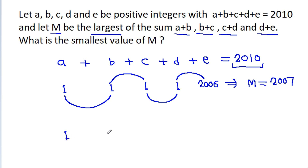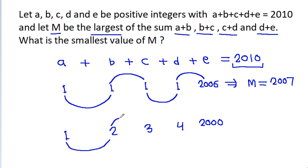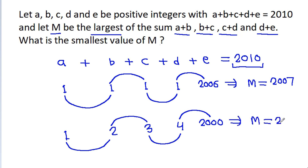Suppose a is 1, b is 2, c is 3, d is 4; then 4 plus 3 is 7, plus 2 is 9, plus 1 is 10, so e will be 2000. In this case, a plus b is 3, b plus c is 5, c plus d is 7, and d plus e is 2004. So m will be equal to 2004.